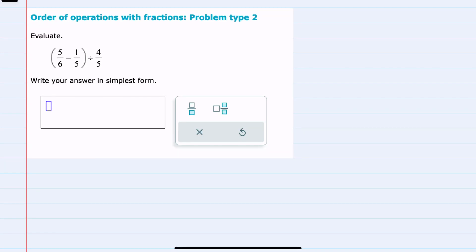In this video I'll be helping you with the ALEKS problem type called order of operations with fractions problem type 2. We're asked here to evaluate (5/6 - 1/5) divided by 4/5 and to give our answer in simplest form. Since we have multiple operations...